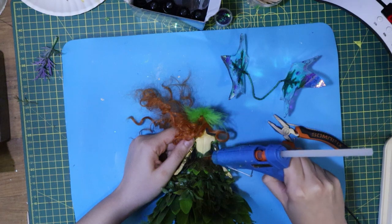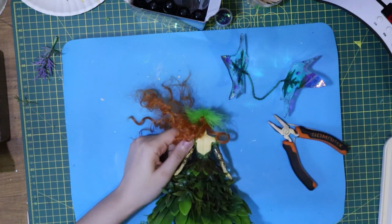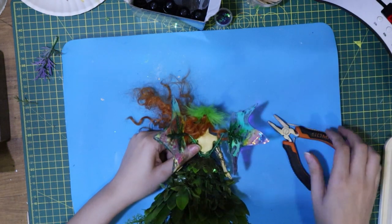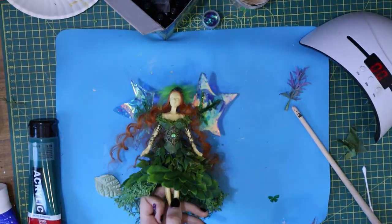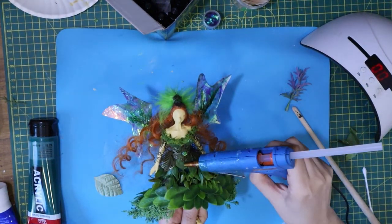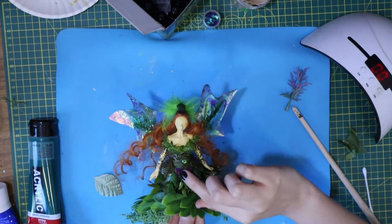Then I hot glue wings on the fairy's back. I attached a small purple butterfly on her gown.